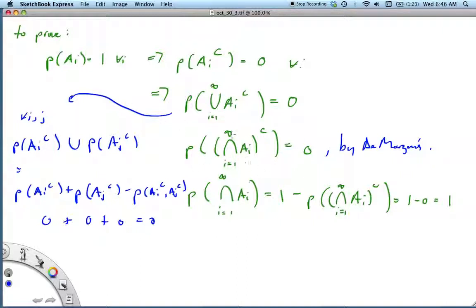By De Morgan's law, we can move the complement from the individual things being summed to the entire operation, but we have to flip union to intersection. So we can say that the probability of the complement of the infinite intersection of Ai is equal to 0.